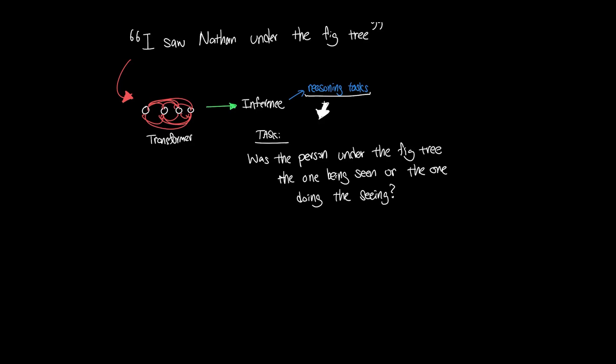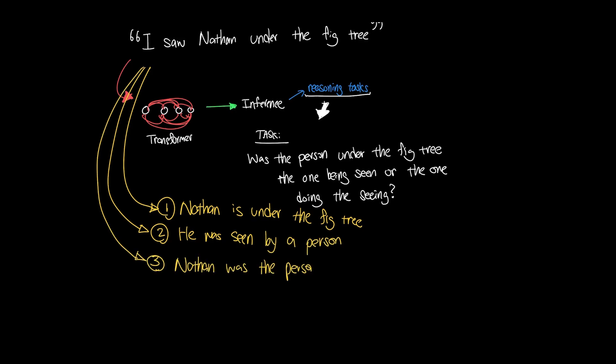Now the answer to us might seem very easy because you can sequentially reason that Nathan is under the fig tree and Nathan was being seen by another person. Nathan therefore was the one being seen. And chaining these logics together gets us to the correct answer.